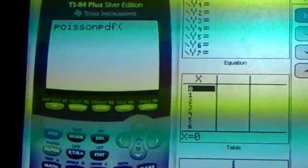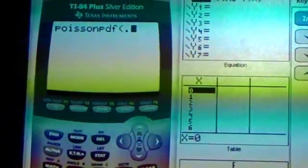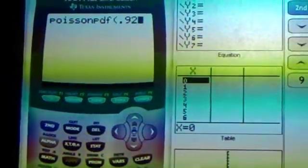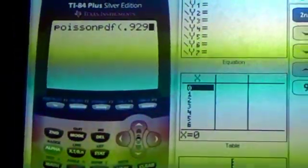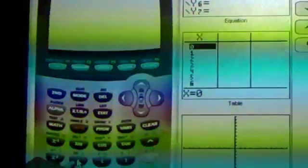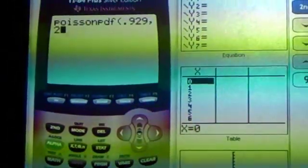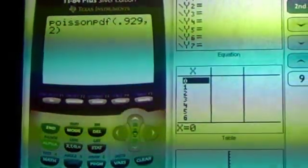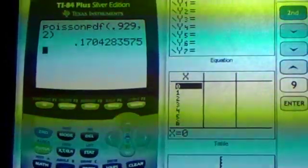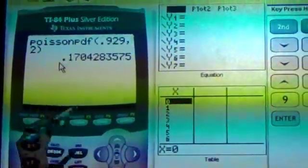And then you have to put in the mean, which was 0.929, then you push the comma, which is right here. And then you put the occurrences, which is 2, and you push enter, and that was the answer right there.